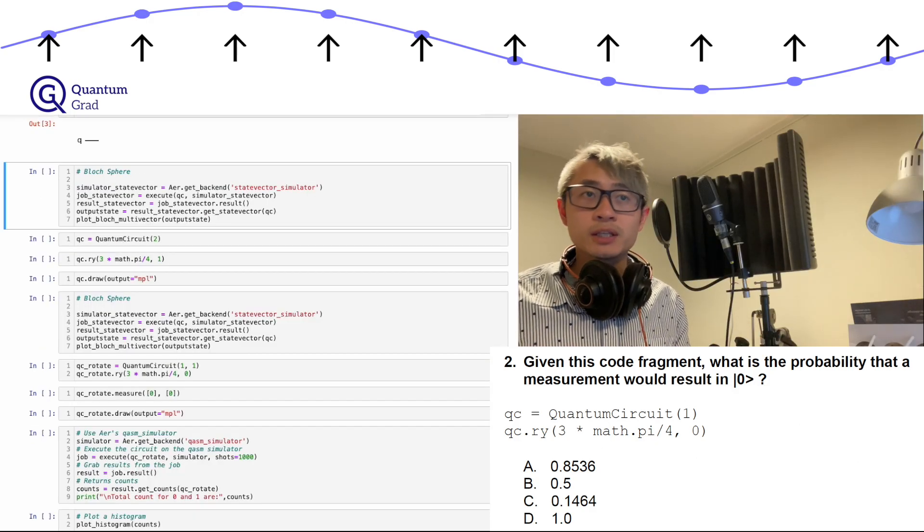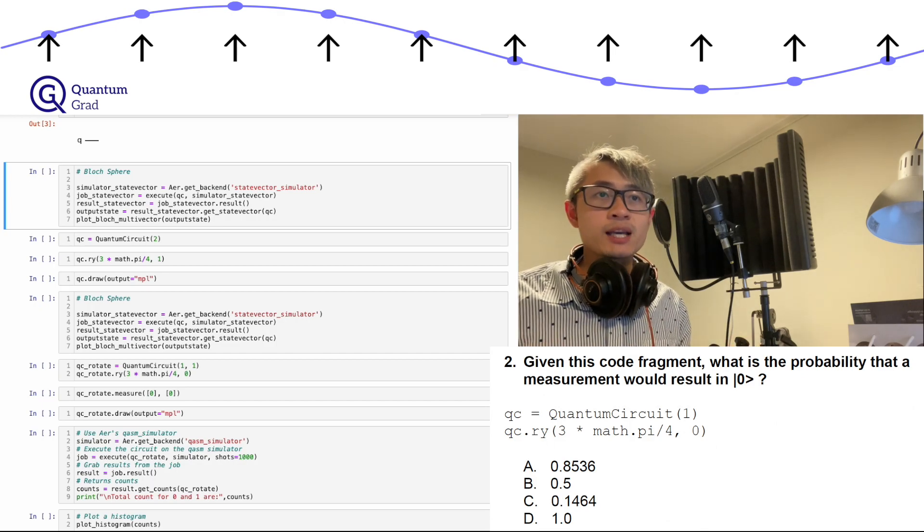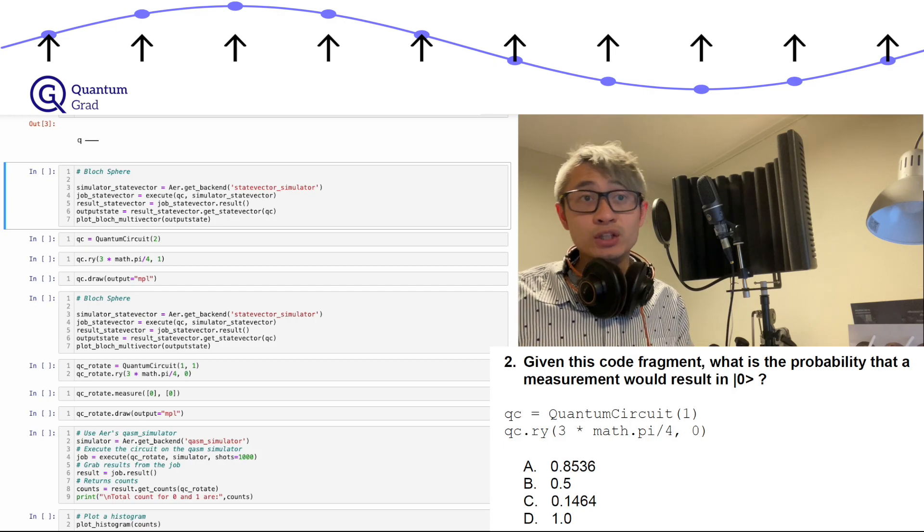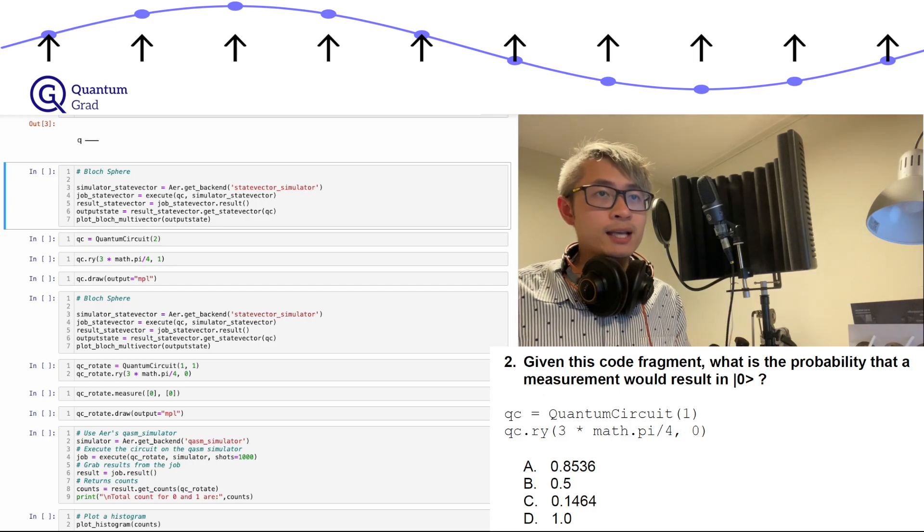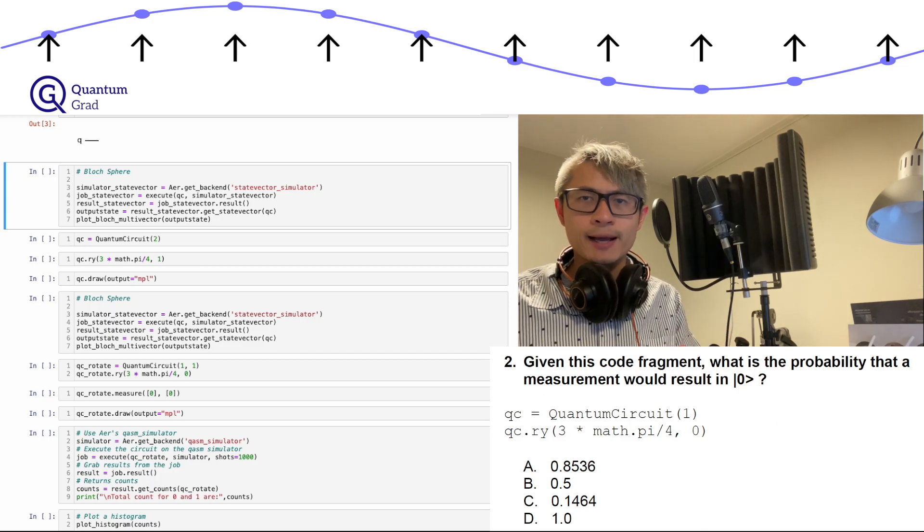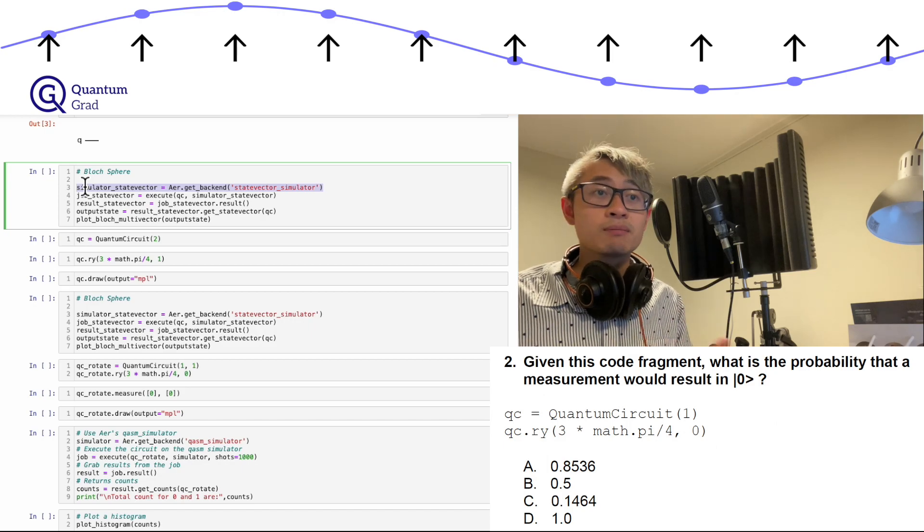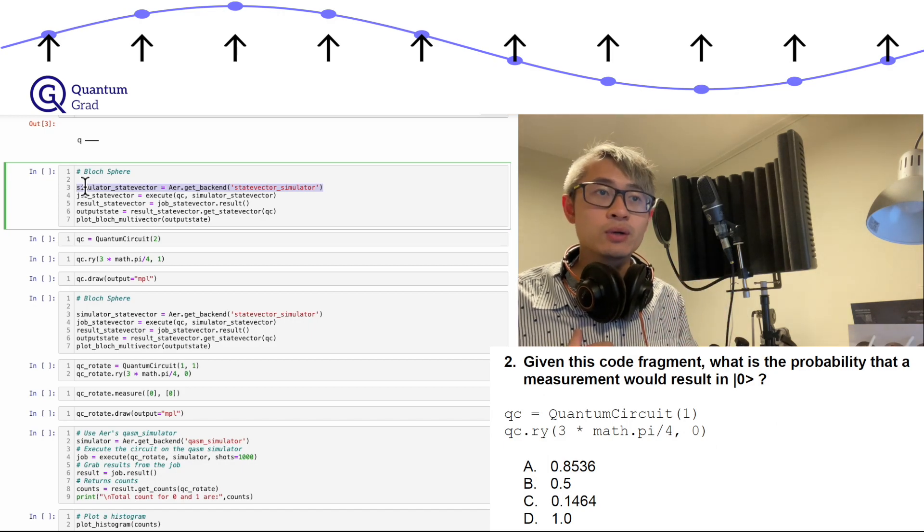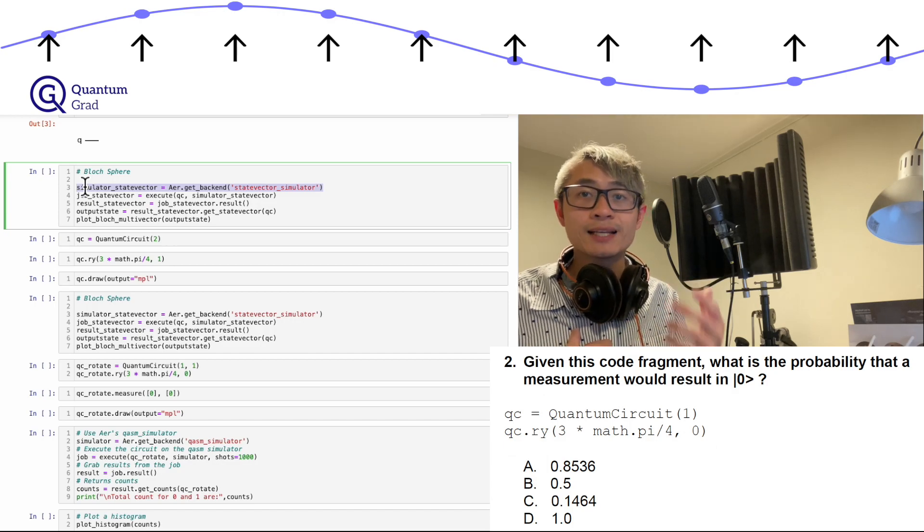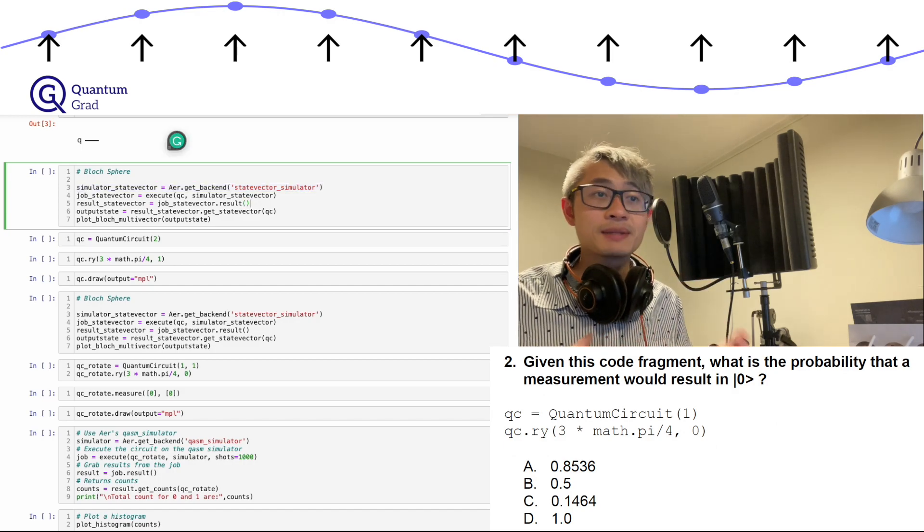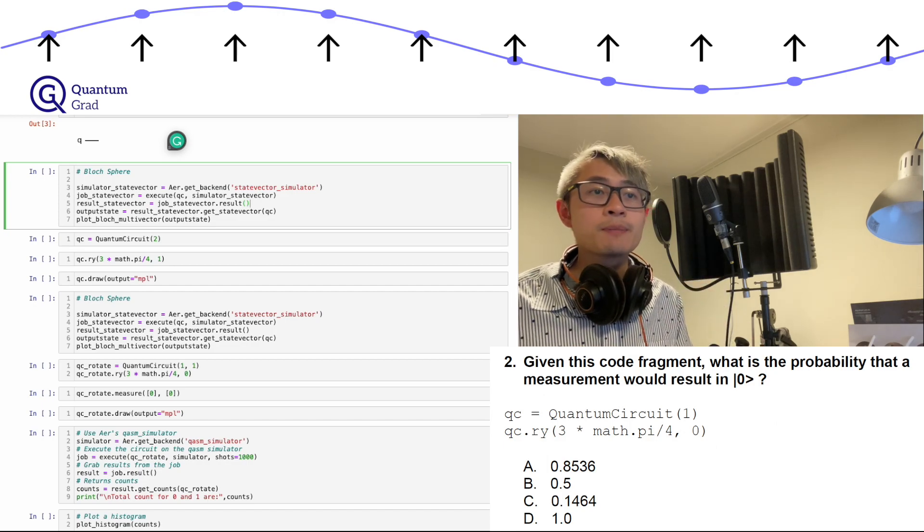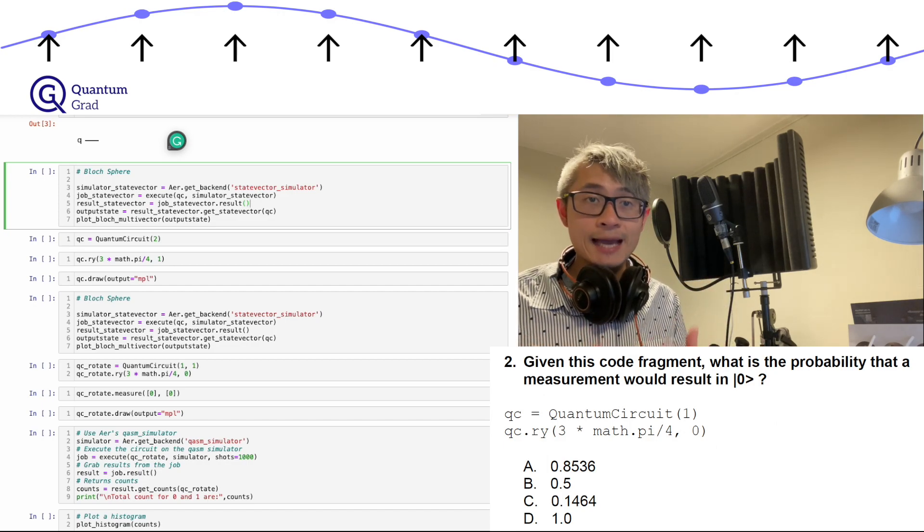Now we introduce a simulator called the statevector simulator. This is an auxiliary backend for Qiskit Aer which simulates an ideal execution of quantum circuit and returns the final quantum statevector of the device at the end of the simulation. It is perfect for educational purposes. We need to call the backend from Aer by typing dot get_backend as shown in the first code and name it as simulator_statevector. Next we execute the circuit with this backend called the job_statevector. Then we obtain our result by using the function dot result. So that is the third line and name it as result_statevector. The final step is to return our quantum state by calling dot get_statevector in our quantum circuit and name it as output state.